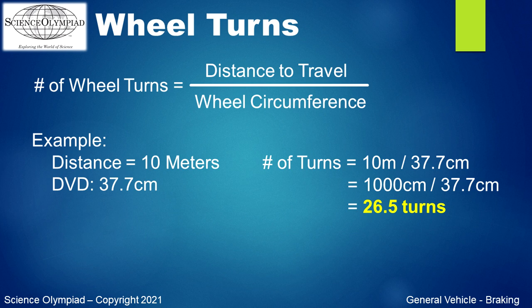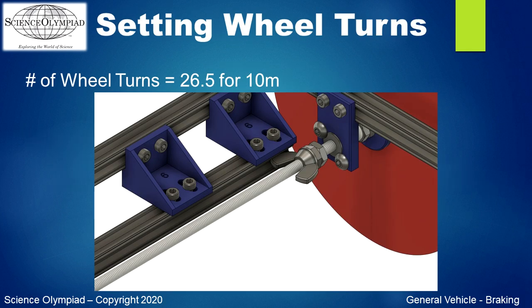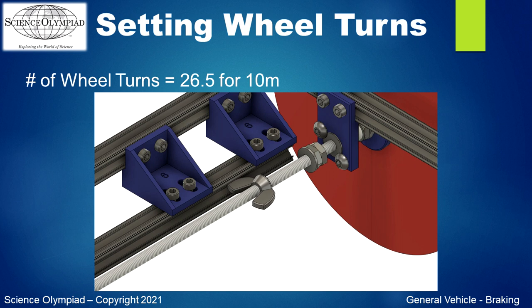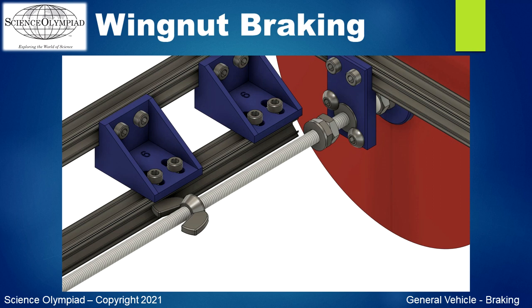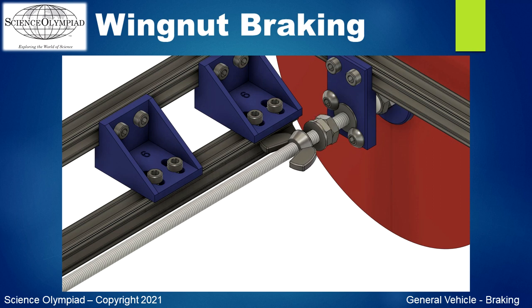This number of turns can be used in combination with the wingnut braking method. With the wheel in the locked position all the way against the locking point, rotate the wheel backwards while counting full revolutions. For our example, the wheel is rotated backwards for 26.5 turns. This will cause the vehicle's wheel and axle to lock after the set number of wheel rotations forward.